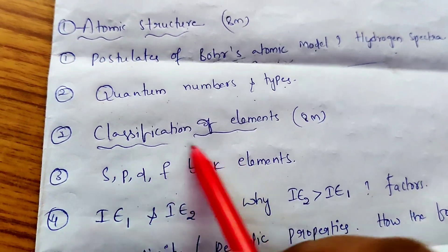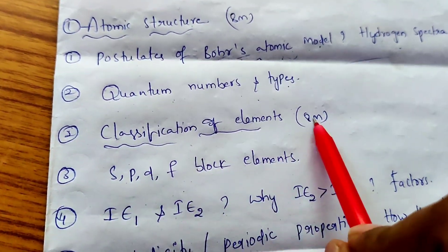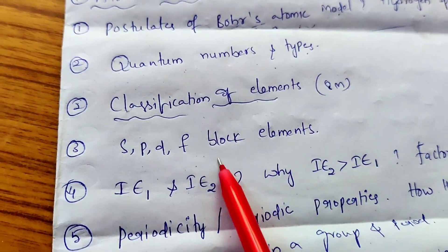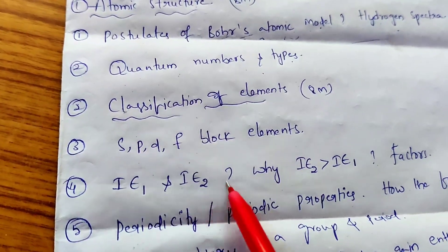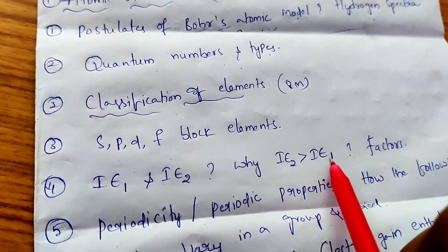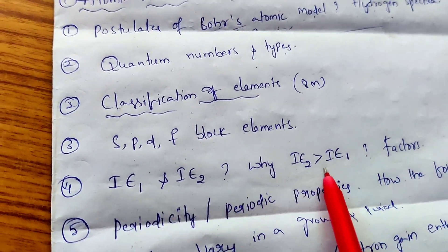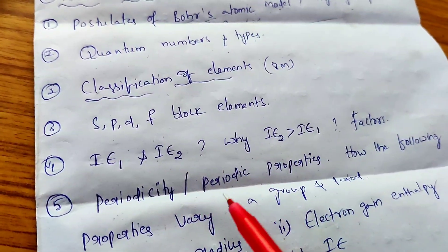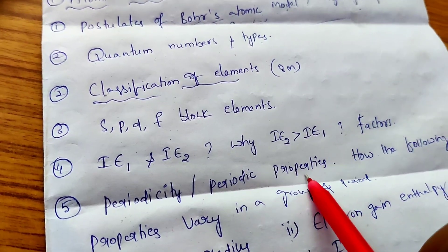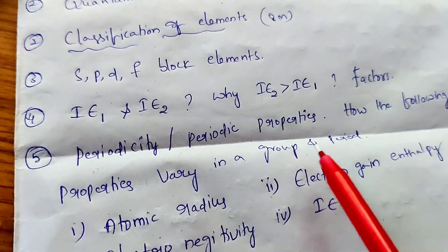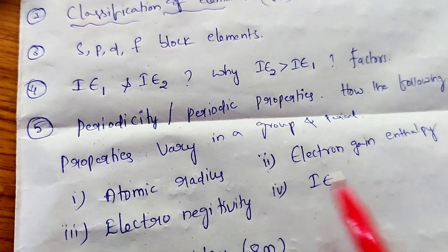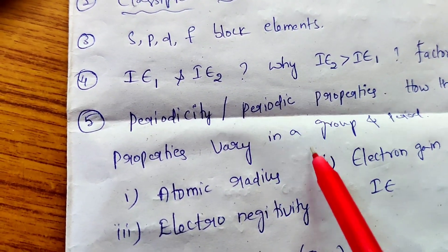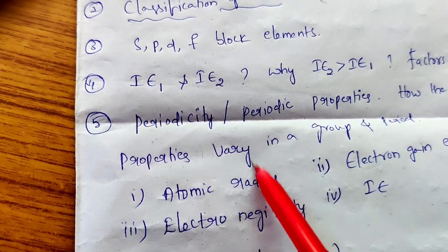Next, Classification of Elements chapter — 8 marks question. First question: Write a note on s, p, d, f block elements. Next: Define IE1 and IE2, why IE2 is greater than IE1, give reasons, and what are the factors affecting ionization enthalpy. Next question: What is periodicity or periodic properties? How do the following properties vary in a group and period — atomic radius, electron gain enthalpy, electronegativity, and ionization enthalpy? Explain how these increase or decrease across groups and periods.